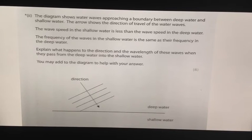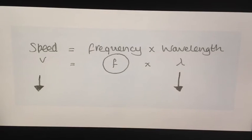So we need to apply the relevant formula. If we think about the formula, if the speed is going down but the frequency cannot change, then the wavelength has to go down as well. The wavelength has to get shorter as the speed decreases.